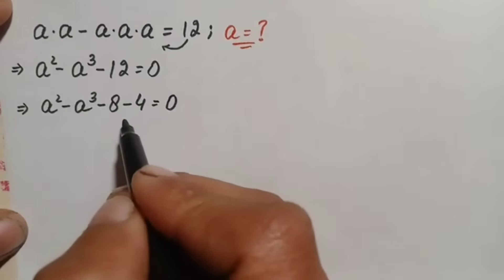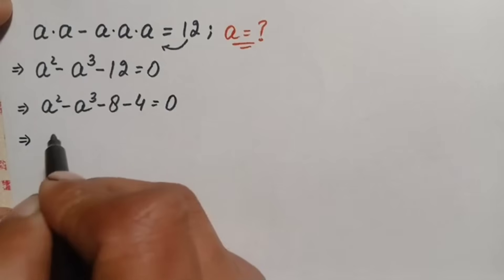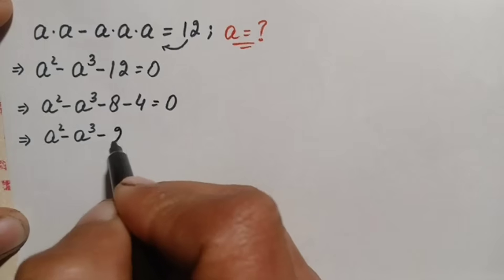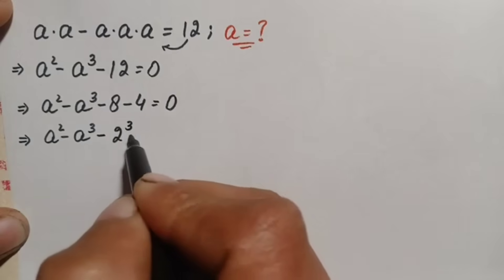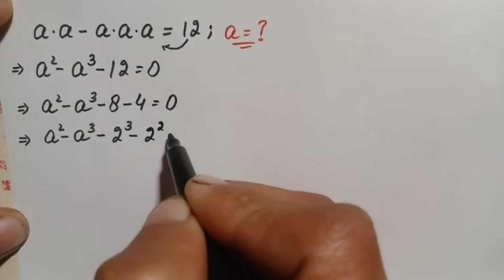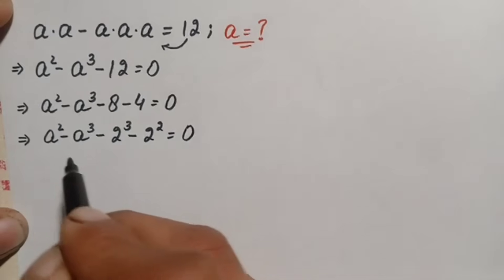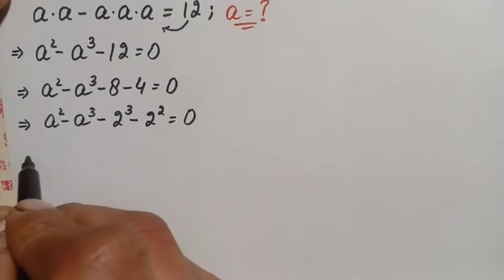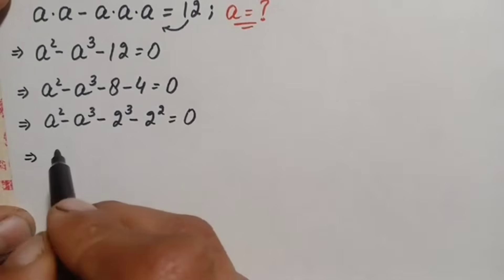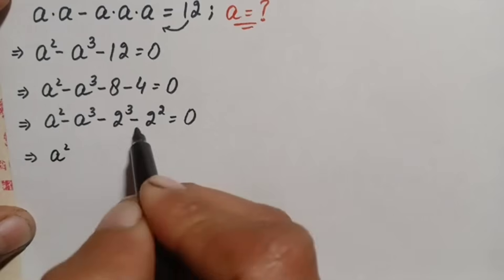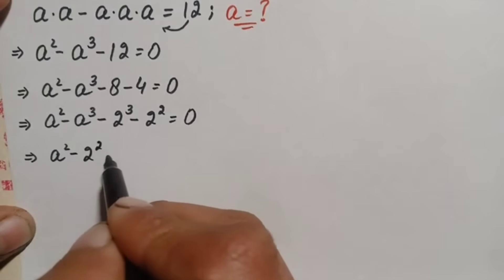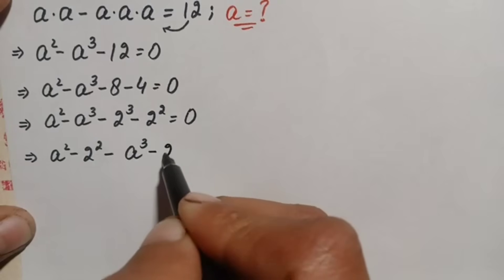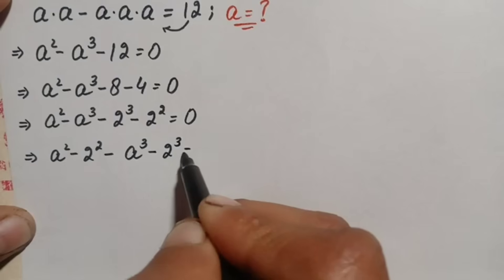Now we convert these two numbers to exponential form. We write negative 8 as negative 2 cubed and negative 4 as negative 2 squared. So the equation becomes a squared minus 2 squared minus a cubed minus 2 cubed equals zero, grouping the squared terms and the cubic terms together.